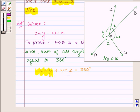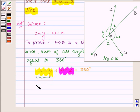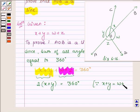Now we are given that x plus y equals w plus z. Therefore, replacing one with the other, we get 2 times x plus y equals 360 degrees. Thus, x plus y equals 180 degrees.